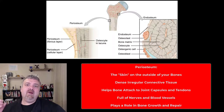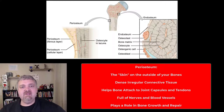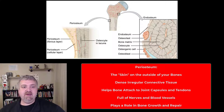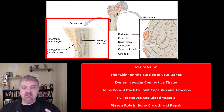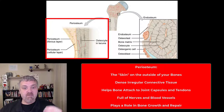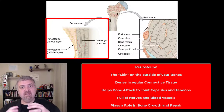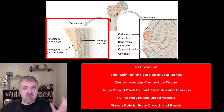Hey everybody, Dr. O here. I want to talk about the skin on and in your bones called the periosteum and endosteum. The periosteum is this connective tissue skin on the outside of your bones. The collagen fibers help attach bone to other tissues like the joint capsules and tendons.